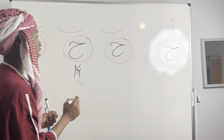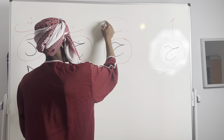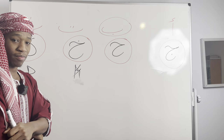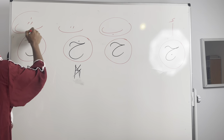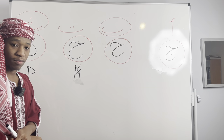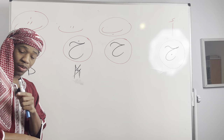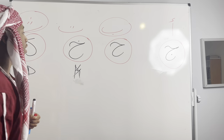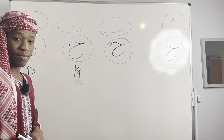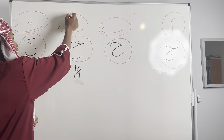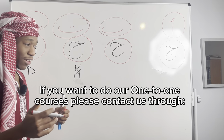Now let's go back to yesterday's lesson and see if you can still remember everything. Which letter is this? Ba. Good. This one here? Don't say Sa — remember your tongue should be out. Tha. Allahumma barik. What about this one? Alif. Mashallah. And the final one? Ta. Good.